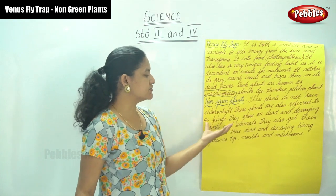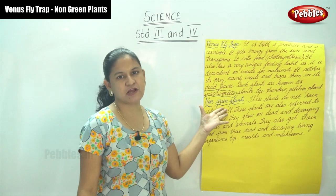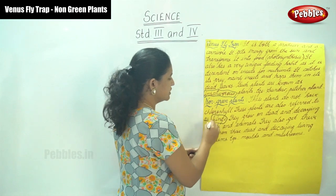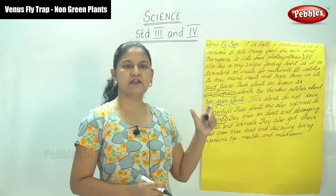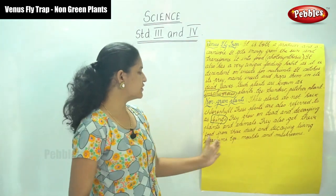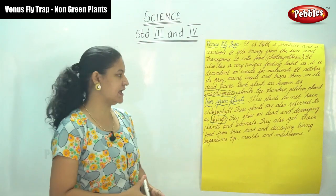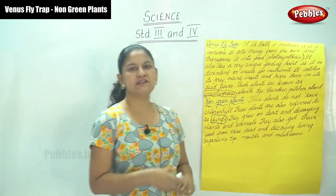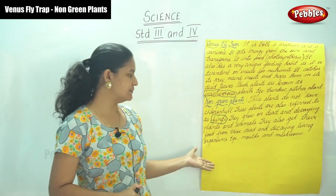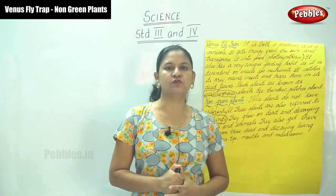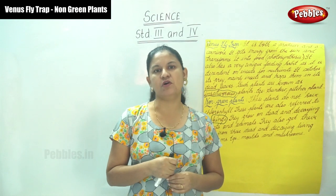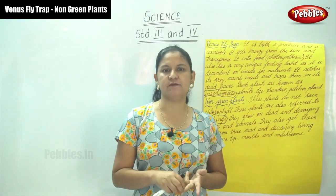These non-green plants are also referred to as fungi. They grow on dead and decaying plants and animals, and they also get their food from these dead and decaying living organisms. Examples are mold and mushrooms. Normally you find mold and mushrooms surviving in damp places or in places where there are dead and decaying plants and animals.